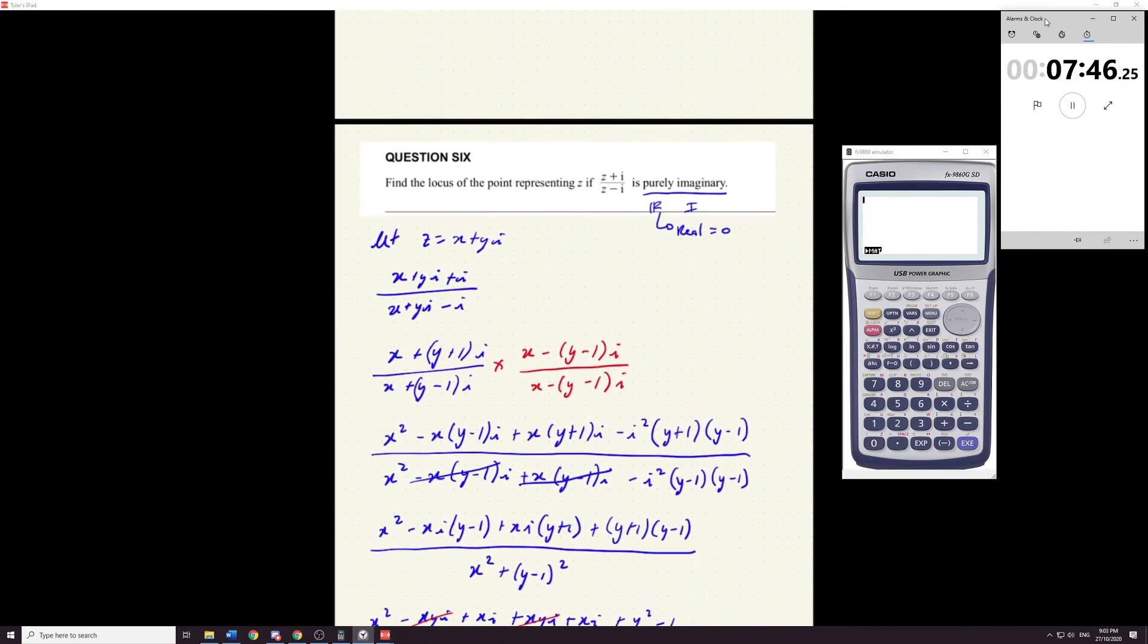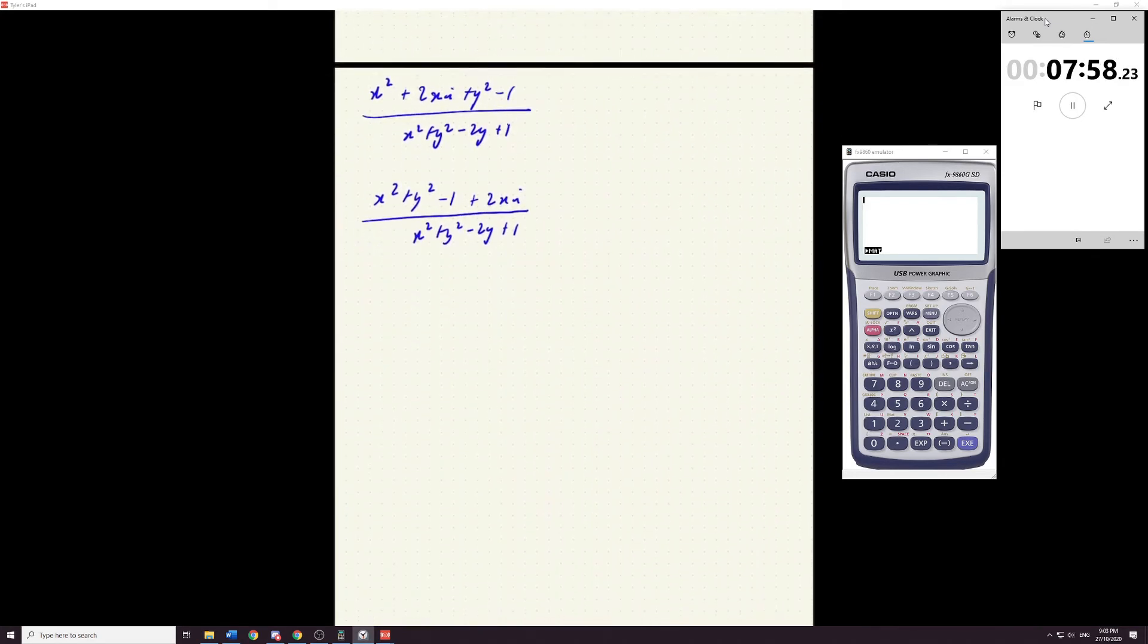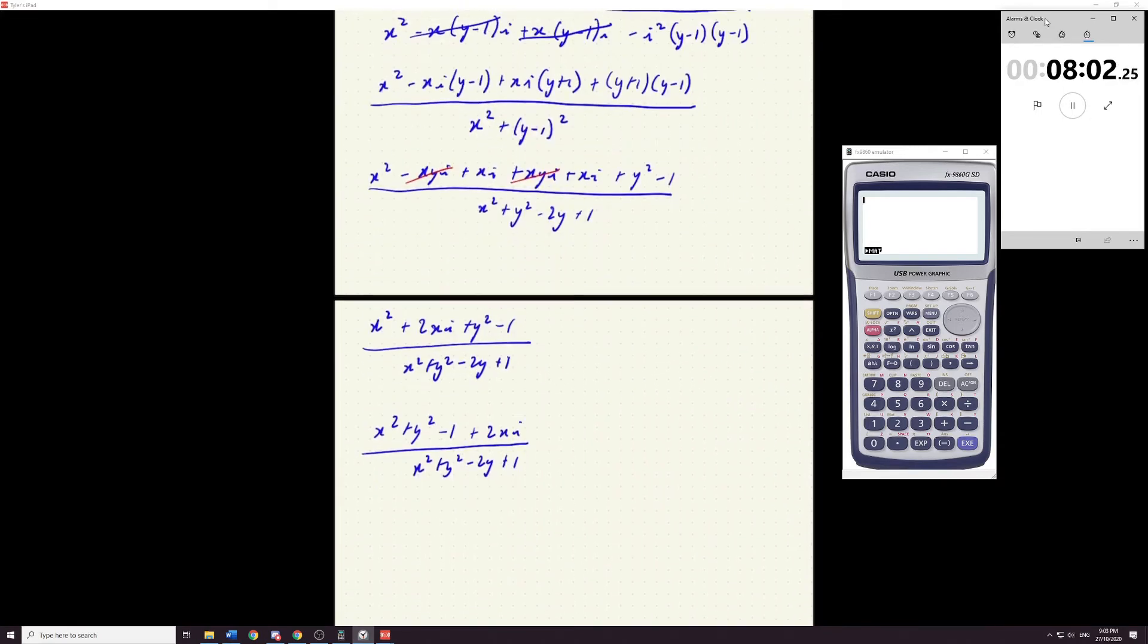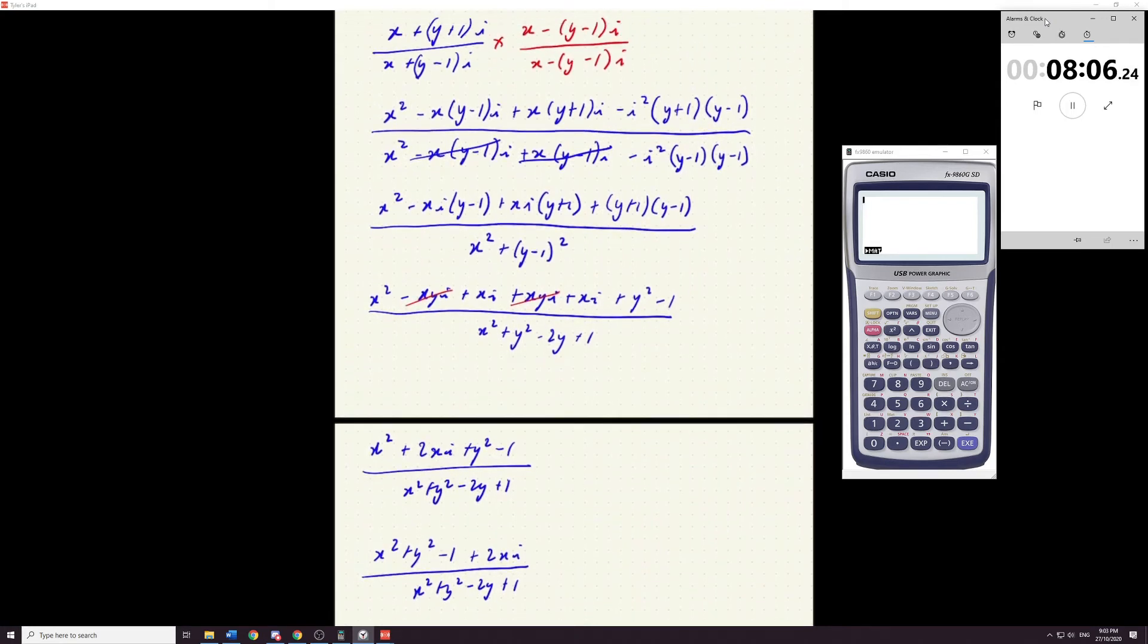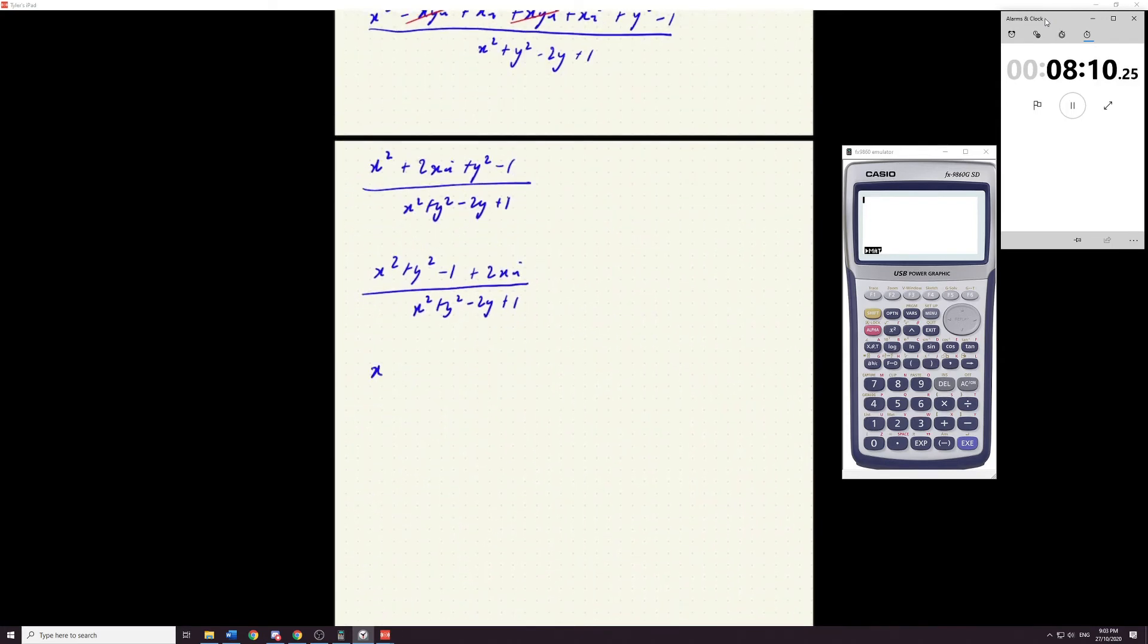And that's where this last piece of information comes. Find the locus of the point representing z. If all of this. This whole division we've done. Is purely imaginary. Which means the real component is zero. So. If I separate this. I don't like that minus two y. Am I sure that's there? Yeah. I guess so. If I separate this. The real parts.